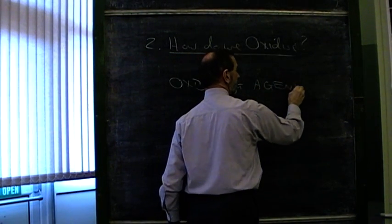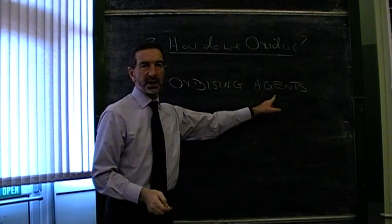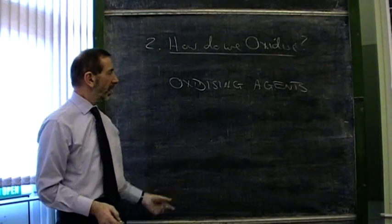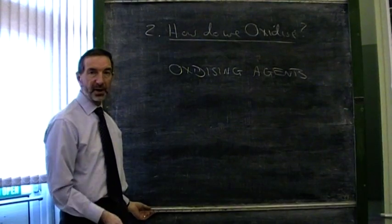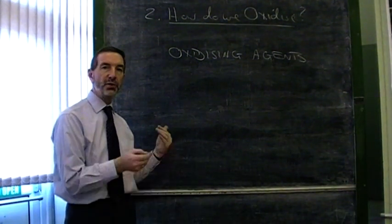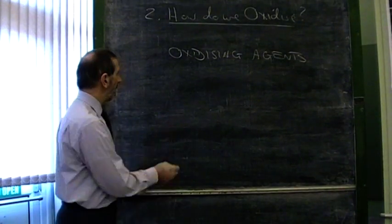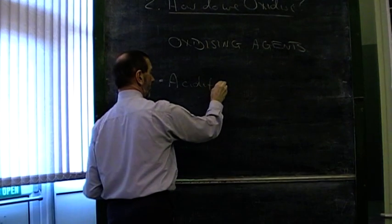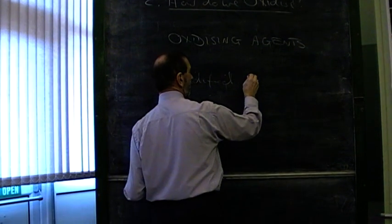Well we need to use chemicals called oxidising agents. And as the name implies, these are agents, substances, which oxidise things. The question now is, can we think of an oxidising agent? Well the two oxidising agents which you must be familiar with here,